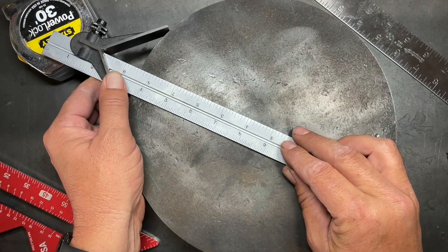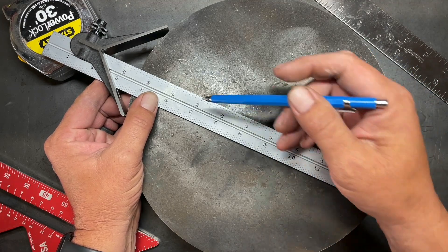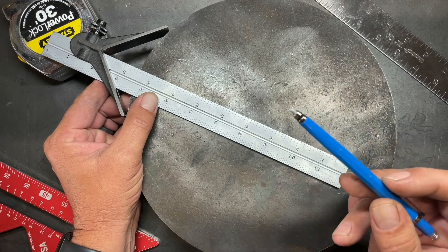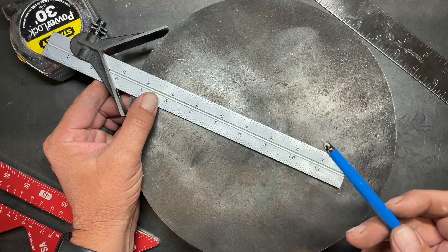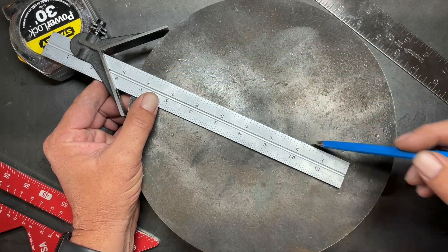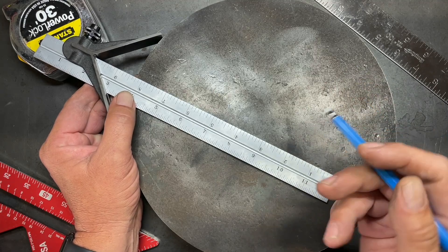But the problem with these is that this actually finds the exact true center. Some would say, well, why is that a problem? Well, the problem is that when you're using a writing instrument, it doesn't allow for the width of your lead. In this case, I'm using Silver Streak, which is a great marker for marking on steel. So when I draw this, it's actually just off of where the center mark is because it doesn't account for the lead.